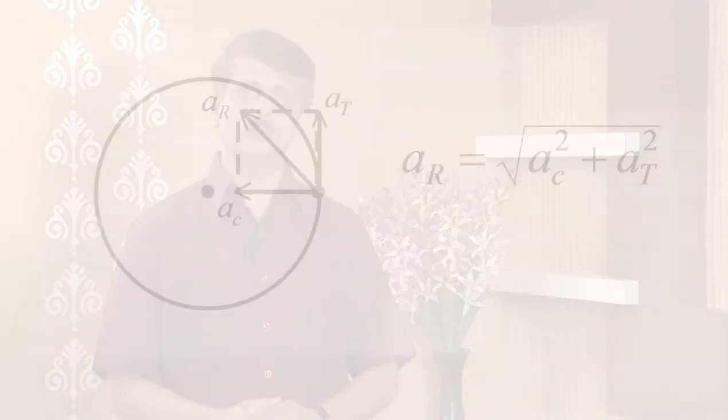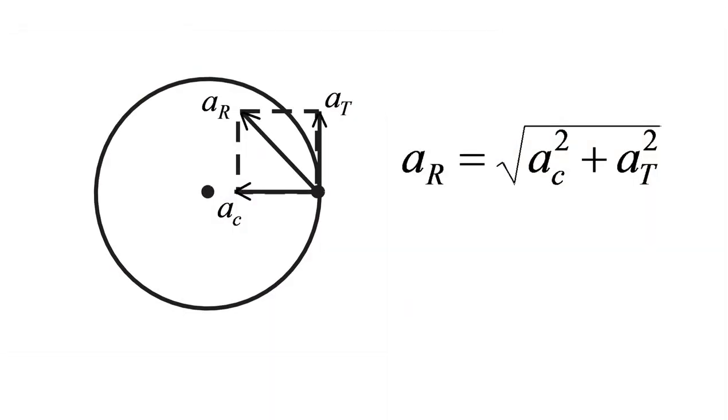Hence, the resultant acceleration acting on an object performing circular motion is a_r equal to root of a_c square plus a_t square.